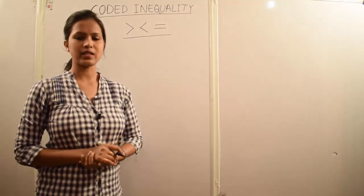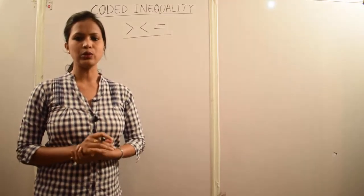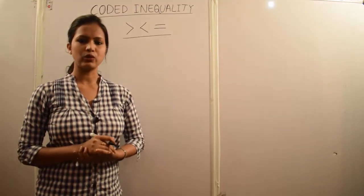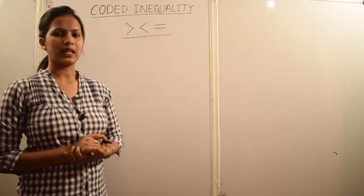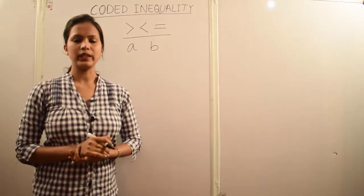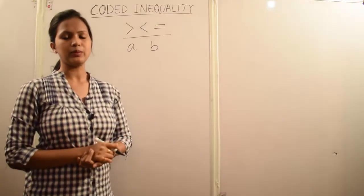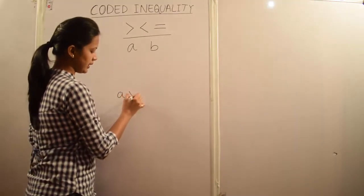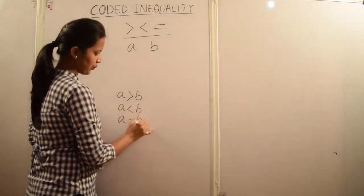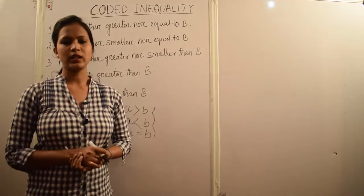Some statement is given and based on the statements you need to find out which conclusion is definitely correct. First of all, we will go through some simple basics so that you will understand the fundamentals of coded inequality clearly. The basic idea is: if A and B are two variables, as coded inequality is based on comparison between two variables, then for A and B the conclusions will be: A greater than B, A less than B, or A is equal to B.